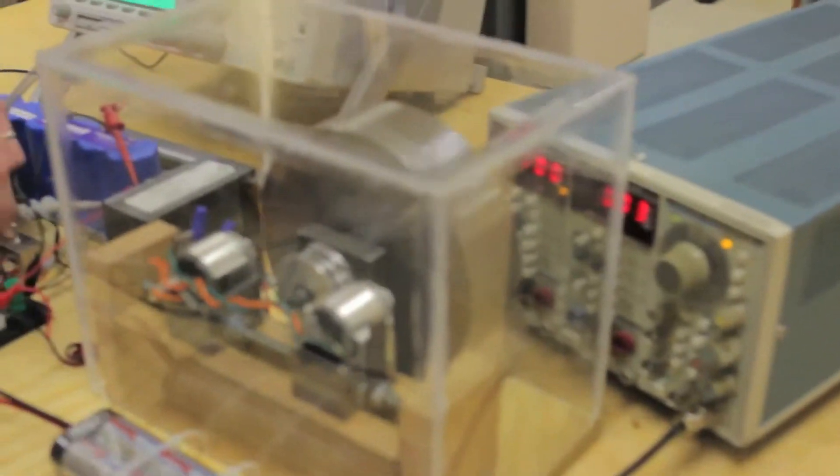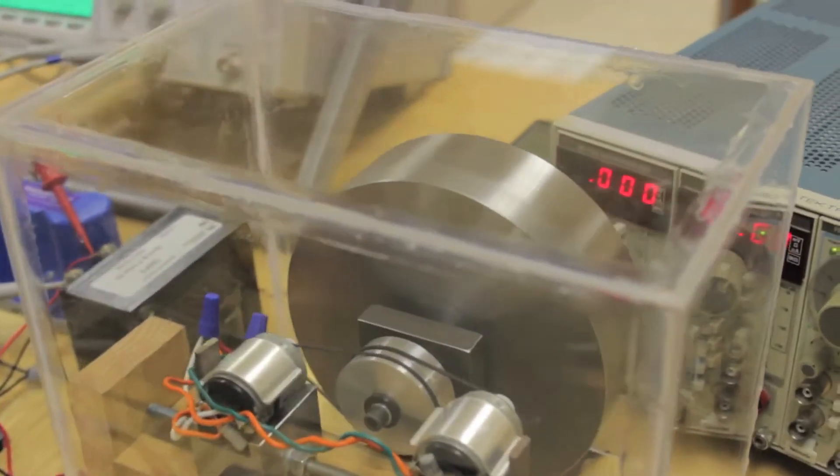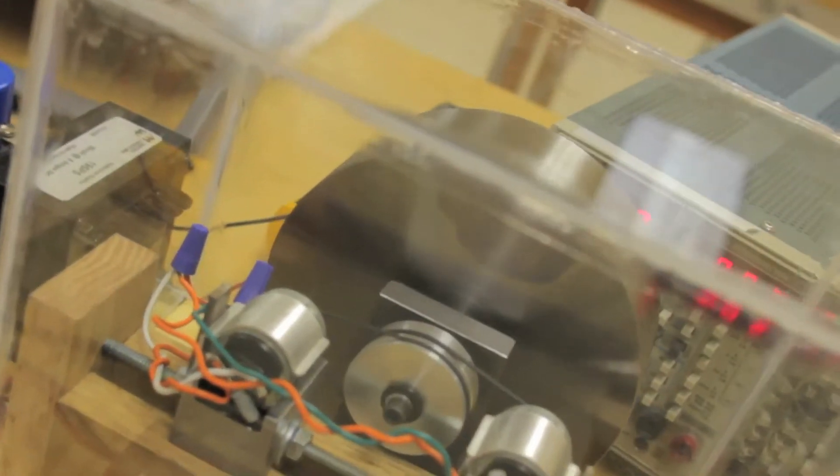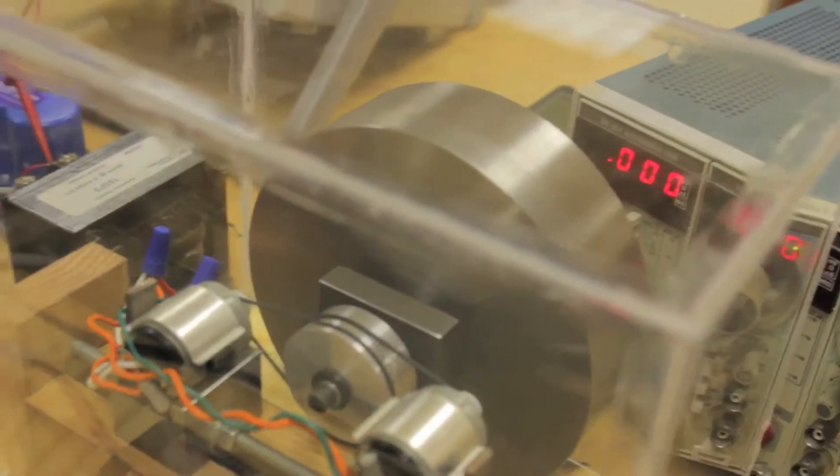All right, basically how the system works is first we spin up our flywheel simulating a vehicle wheel accelerating down the highway. Approximately 15 to 20 seconds, nice smooth acceleration.